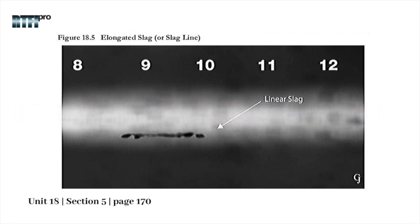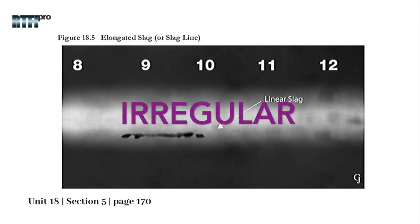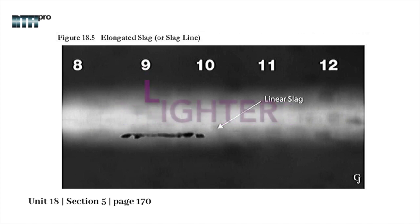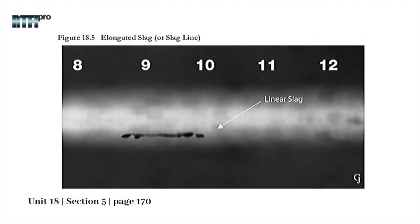Slag lines can be confused with incomplete penetration or lack of fusion, as in some cases they are very similar in appearance. A key point to remember is to look at the density of the indication and the direction. Slag lines, in most cases, will be more irregular than lack of fusion or incomplete penetration, and the density will be lighter. In most cases, the slag indication will not have a straight appearance as lack of fusion or incomplete penetration.